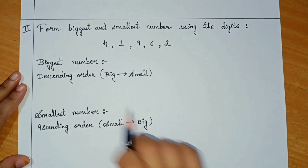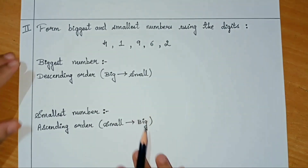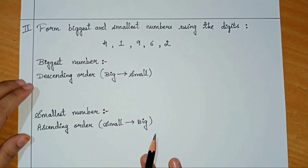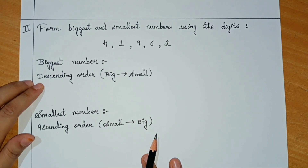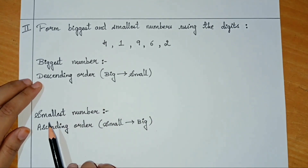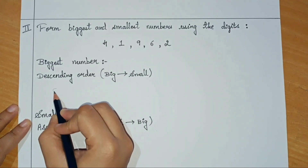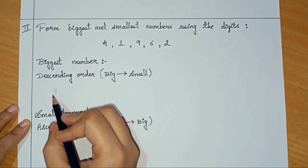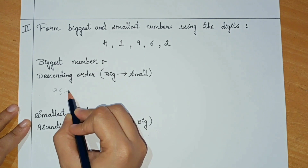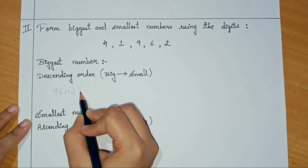Now let us see how to form the biggest and smallest numbers using these digits. First, let us form the biggest number. Remember, to form the biggest number we have to always use the rule of descending order. In descending order, we know that the numbers are written from big to small. So the biggest number here is 9 — I will write 9 first. Then the next biggest number is 6, after that it is 4, next 2, and then finally 1.